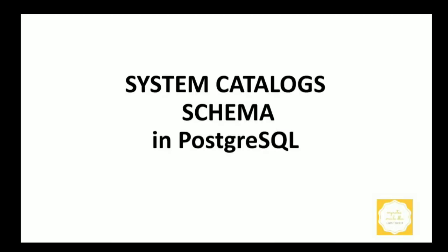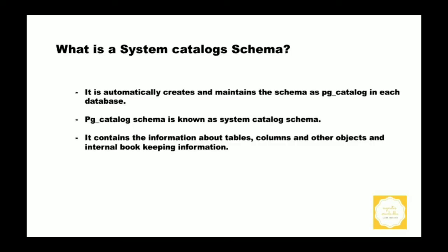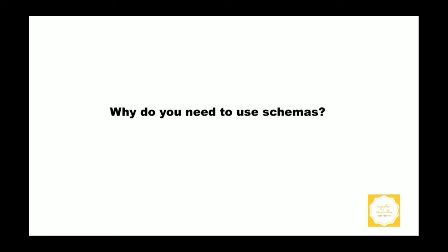Today we are going to discuss the system catalog schema in PostgreSQL. PostgreSQL automatically creates and maintains a schema called pg_catalog in each database. This schema is known as the system catalog schema because it stores information about tables, columns, other objects, and internal bookkeeping information.